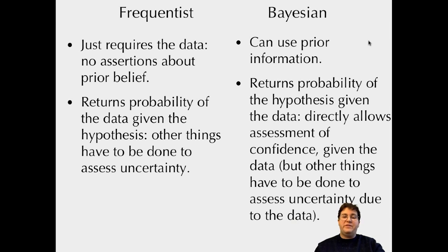And Bayesian approach is to return the probability of the hypothesis given the data. So we directly assess the confidence. So you can say, this region of parameter values contains 95% of my posterior probability. But it just takes the data as given. If you want to look at uncertainty due to the data, you have to do other things as well.